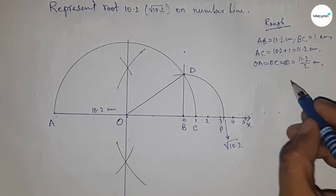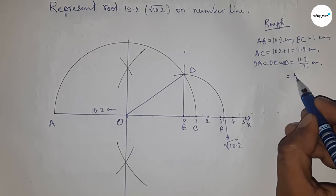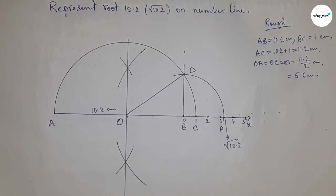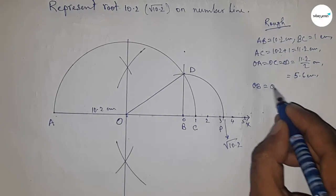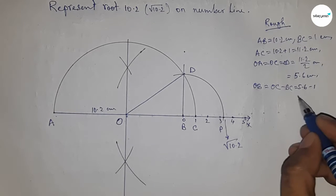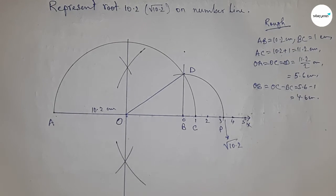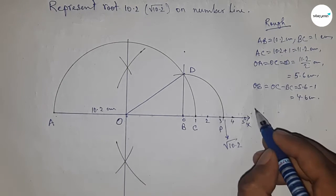Distance OB equals OC minus BC. Putting the values of OC and BC, this is 4.6 centimeters.